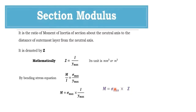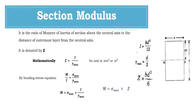For a rectangular section, I is given by (1/12) × b × d³. The neutral axis is at the centre, so Y_max equals d/2, since d is the depth. Therefore, the section modulus Z for a rectangular section works out to b × d² / 6.